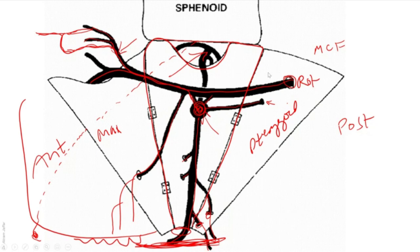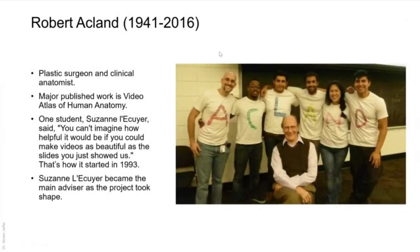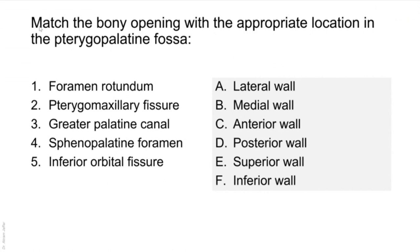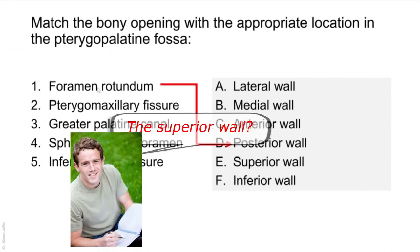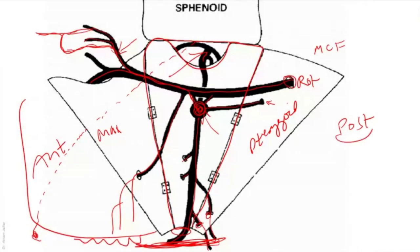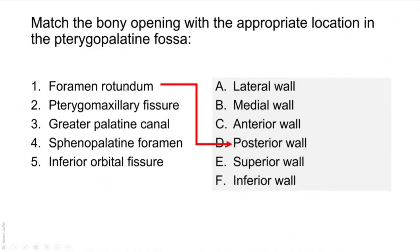A very good video about the pterygopalatine fossa was produced by Dr. Robert Ackland and shared by the American Association of Anatomists, along with questions I'll show you now. Match the bony opening with its appropriate location in the pterygopalatine fossa. Foramen rotundum is located in the posterior wall of the fossa — this is the posterior wall, and this is the foramen rotundum. In the superior wall there is no opening; it's just the sphenoid bone. In the posterior wall we also have the pterygoid canal, where the maxillary nerve passes from the middle cranial fossa.